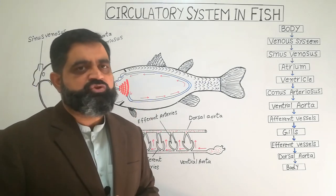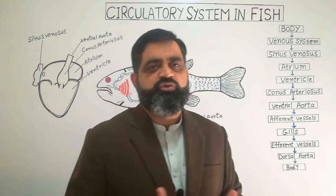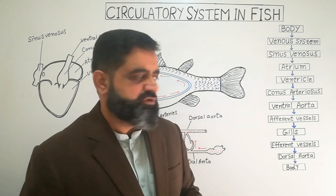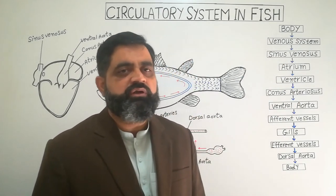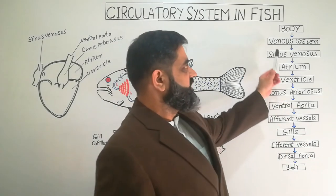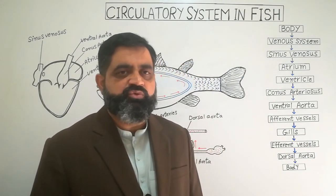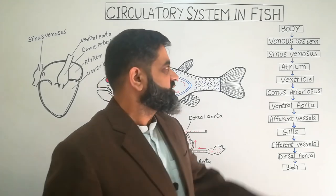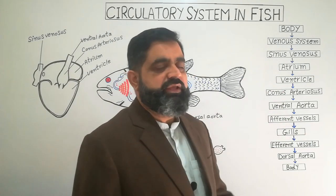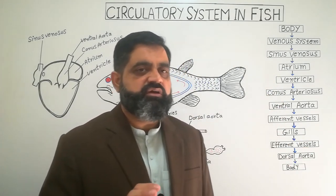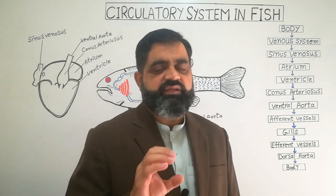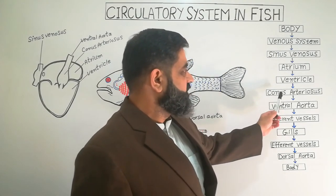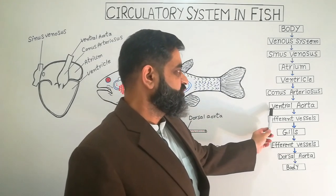To make it easier, here is a summary scheme. The body produces deoxygenated blood, which is collected by the venous system — composed of veins and venules. This system brings deoxygenated blood into the sinus venosus, the first small chamber of the heart. The sinus venosus pumps blood into the atrium, and the atrium pumps it into the ventricle. There are valves at each step to control backflow of blood.